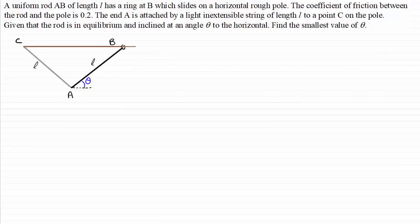This is a follow-up example on equilibrium of a rigid body. We have a uniform rod AB of length L with a ring at B that slides on a rough horizontal pole. The coefficient of friction between the rod and the pole is 0.2. End A is attached by an inextensible string of length L to a point C on the pole. Given that the rod is in equilibrium and inclined at angle theta to the horizontal, we need to find the smallest value of theta.